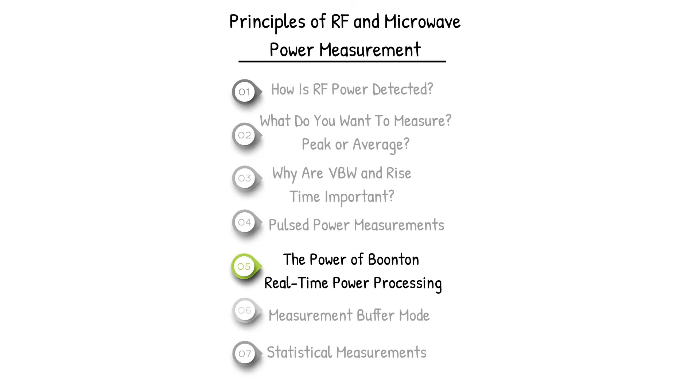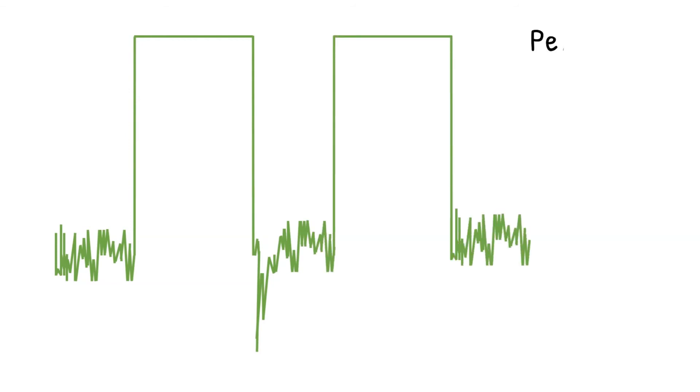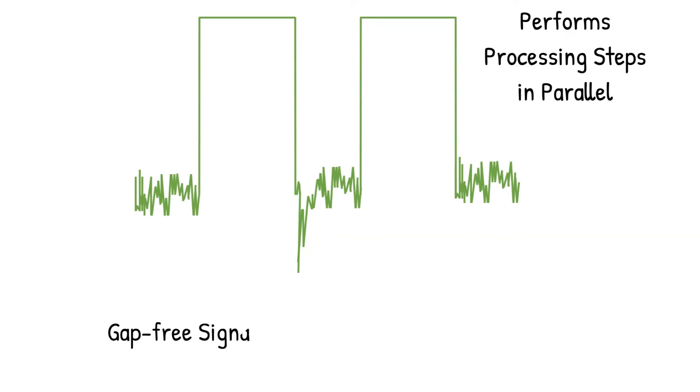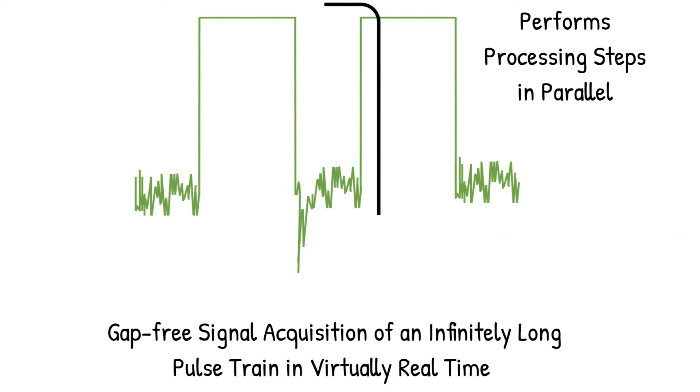Boonton also has a unique processing approach called real-time power processing. RTPP keeps pace with signal acquisition by performing vital processing steps in parallel, delivering gap-free signal acquisition of an infinitely long pulse train in virtually real-time to reliably capture intermittent signal phenomena, like dropouts.